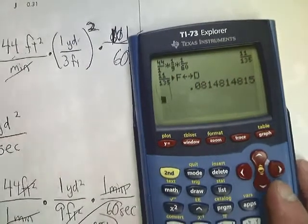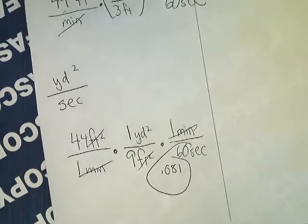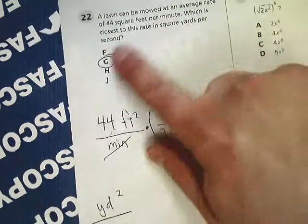Which means that the answer is G, by the way. You can't see any of that. 0.081. The answer is G.